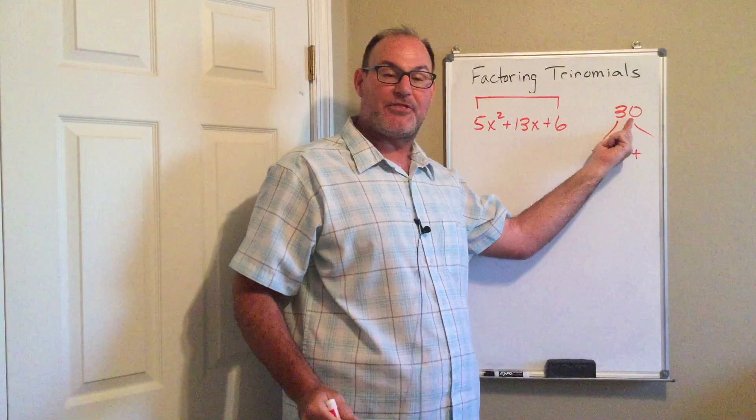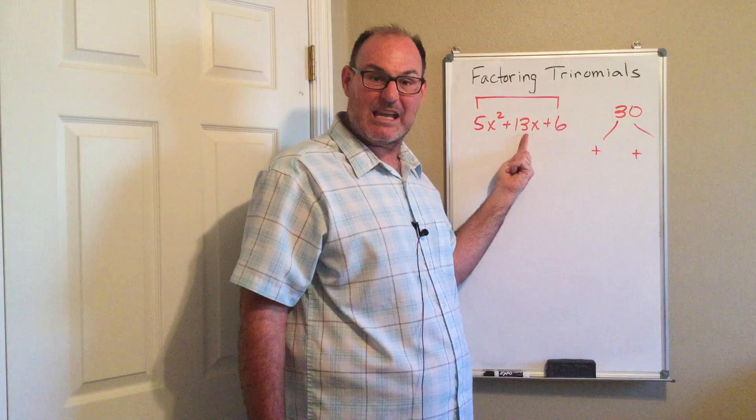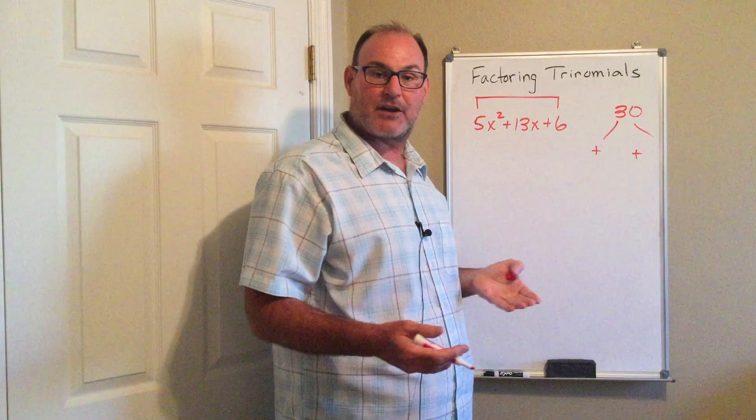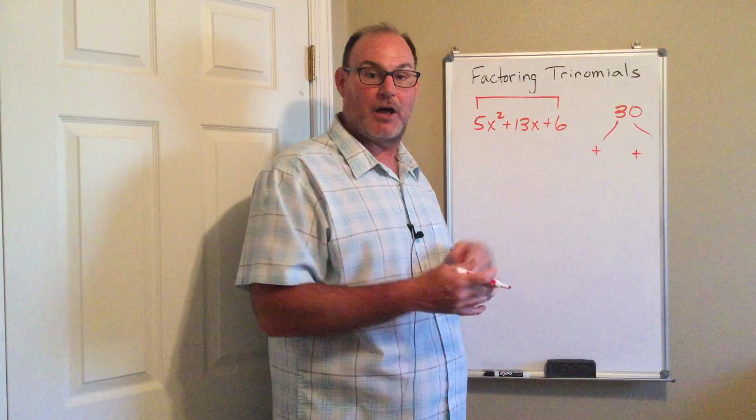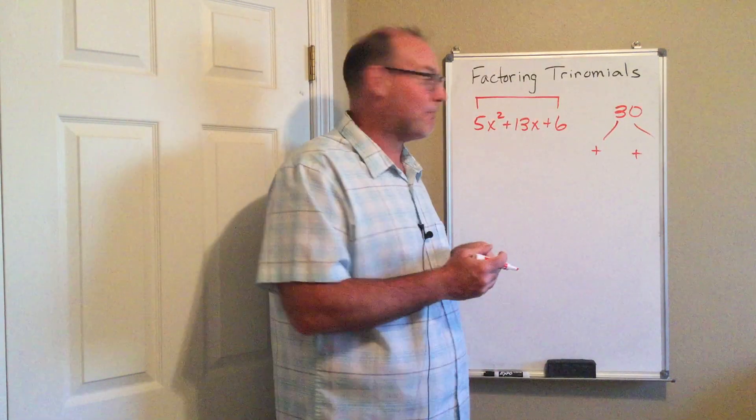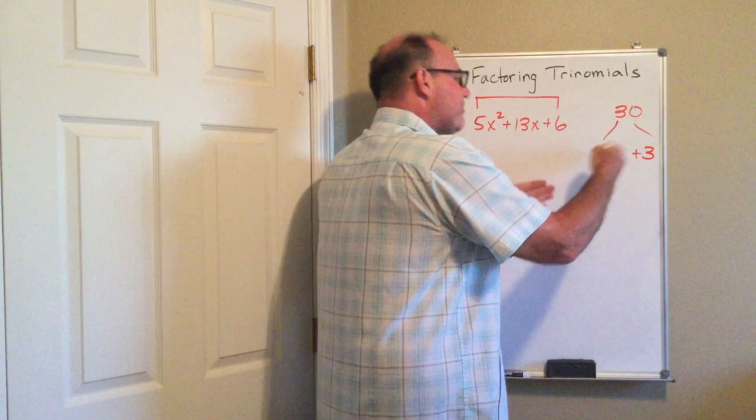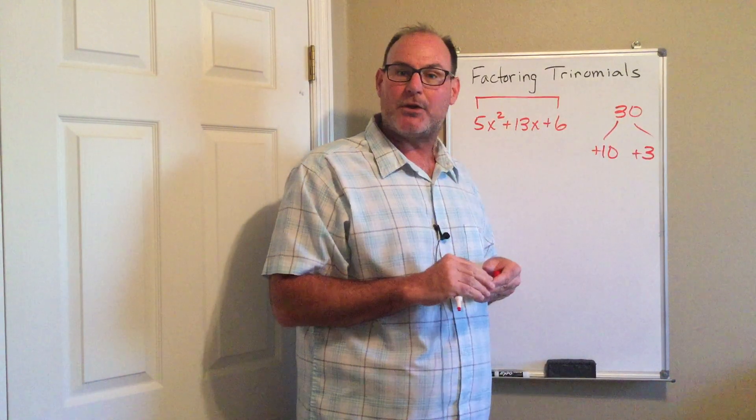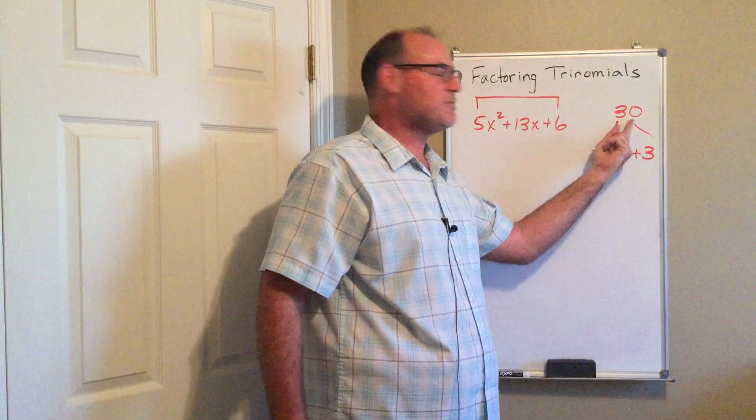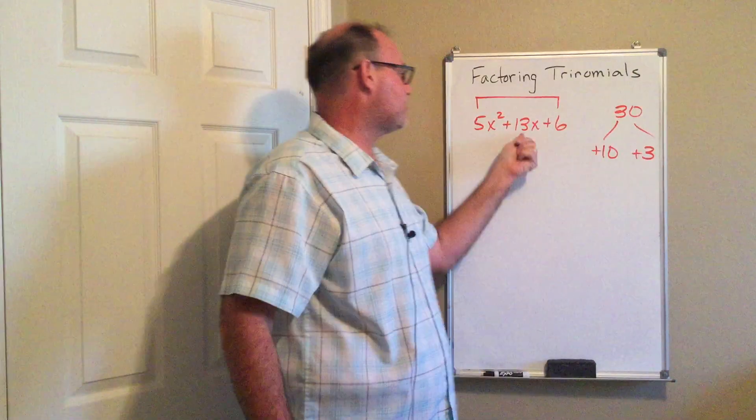Now I'm going to pick the factors of 30 that add up to 13, and you can list your factor choices. We've done that on other videos. I'm going to use 10 and 3, or 3 and 10—it doesn't matter what order. 10 times 3 gives me 30, and 10 plus 3 gives me 13.